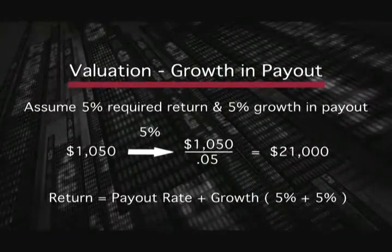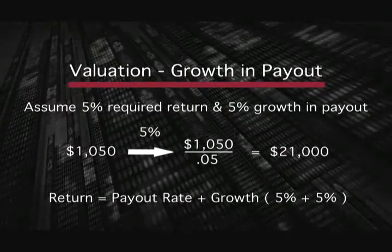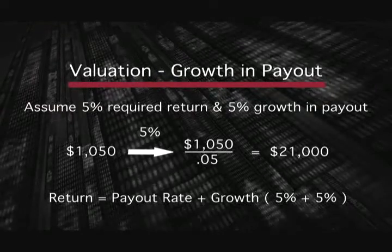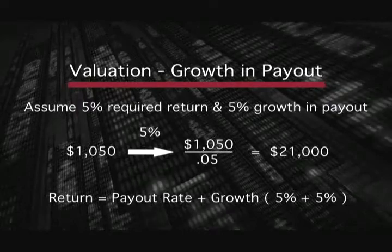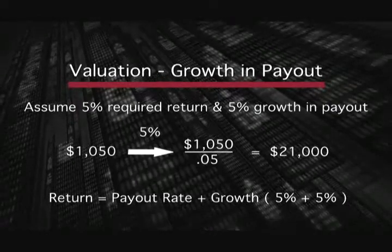Now clearly in this instance there is no growth. So what happens when you add growth? Let's assume the company is actually expanding — in the example of a coin-operated laundry, it's adding more and more outlets and starts to grow by 5% a year. So what's that worth to you? It's $1,050. So $1,000 plus the growth of $50 divided by 5% — you can see that the company is now worth $21,000 and you're generating a 5% rate of return.